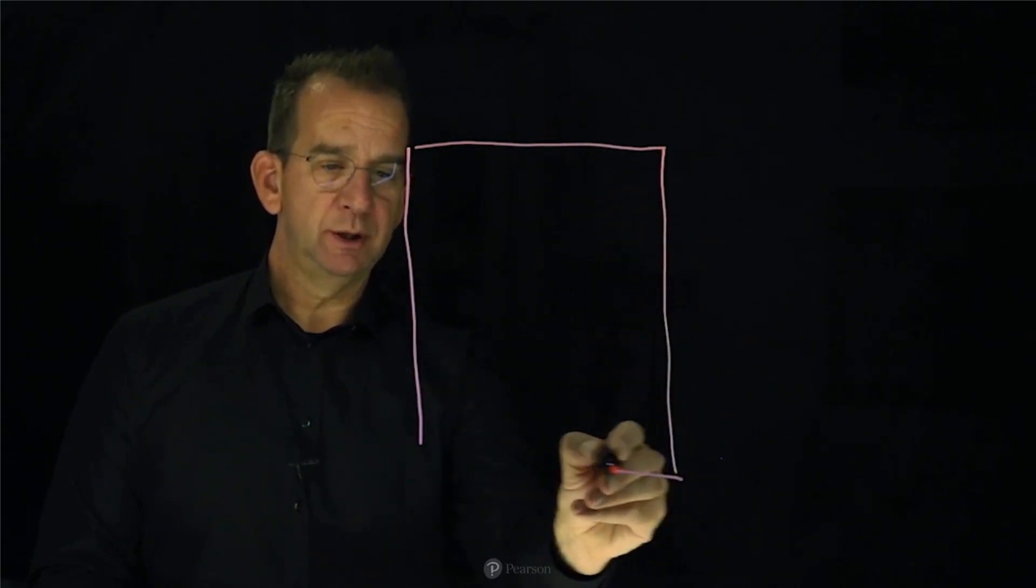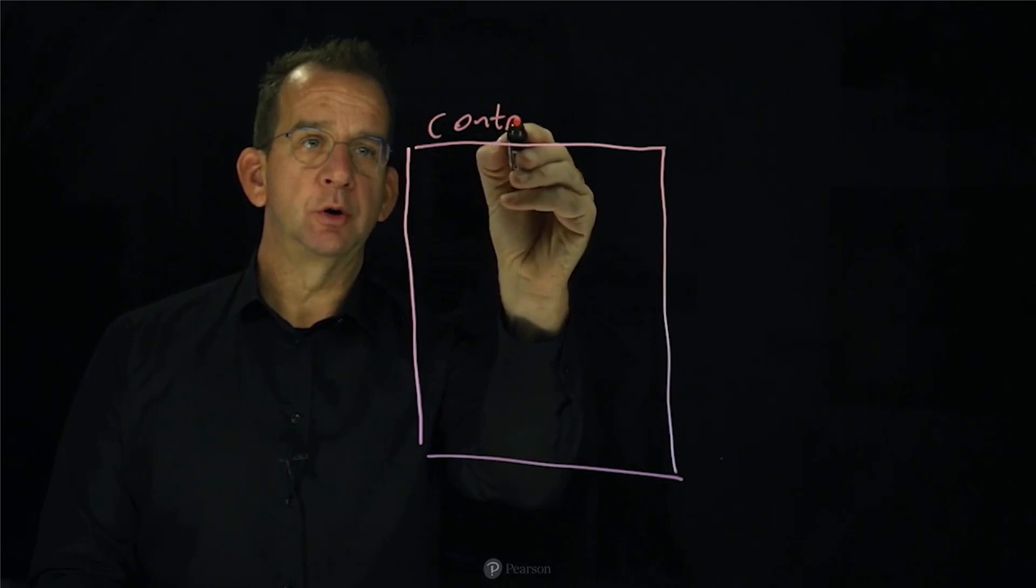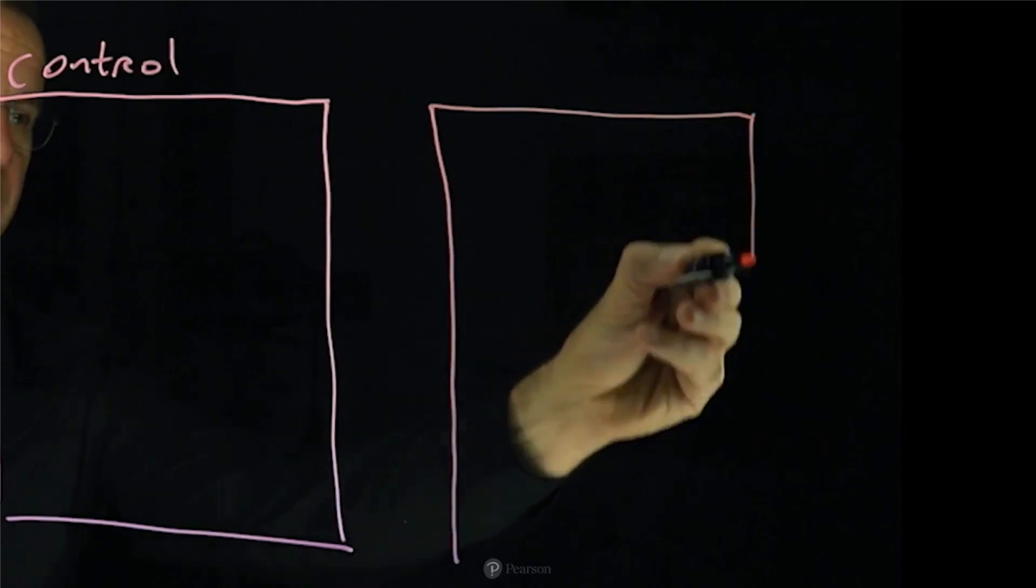The most important node in your Kubernetes cluster is what we call the control node. Apart from the control node, we have multiple worker nodes.